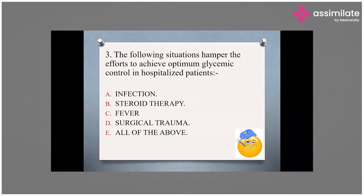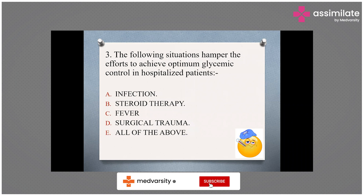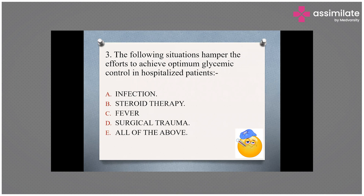The following situations hamper efforts to achieve optimum glycemic control in hospitalized patients. Despite starting insulin therapy, some conditions may prevent achieving glycemic targets. These include: A) infection, B) steroid therapy, C) fever, D) surgical trauma, and E) all of the above.